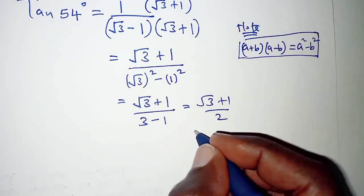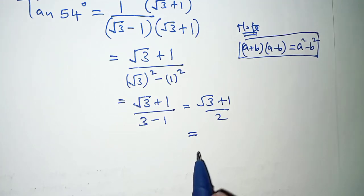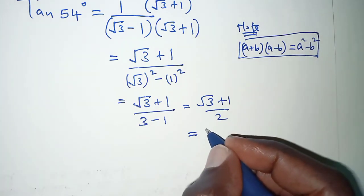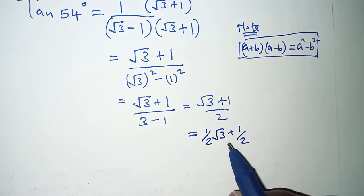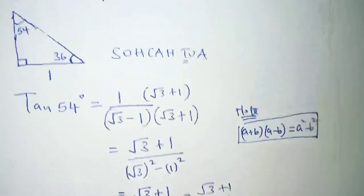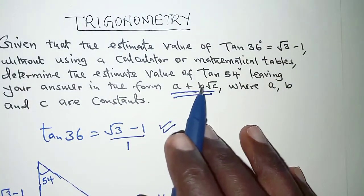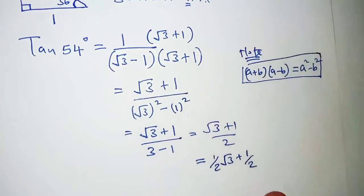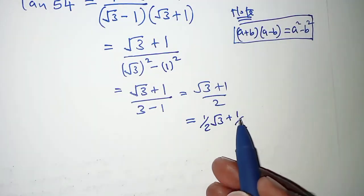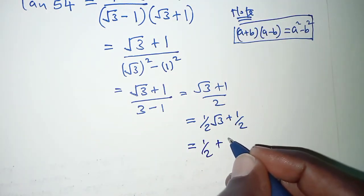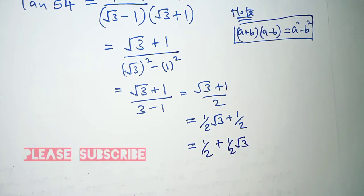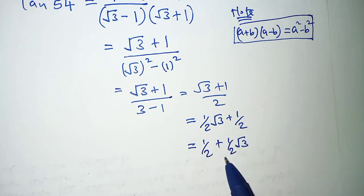And we cannot leave our answer in that form yet, so we can have a half root 3 plus a half. And since we are required to leave our answer in the form a plus b root c, I would also prefer that we begin by a half. So this is still the same as a half plus a half root 3. So for this case, a half here represents a, and then this a half here represents b, and then 3 represents c.